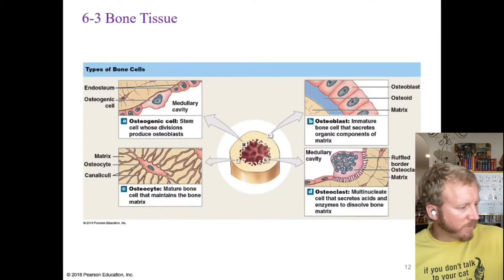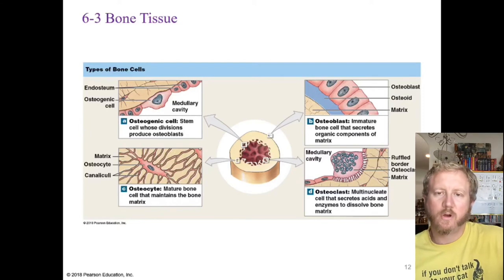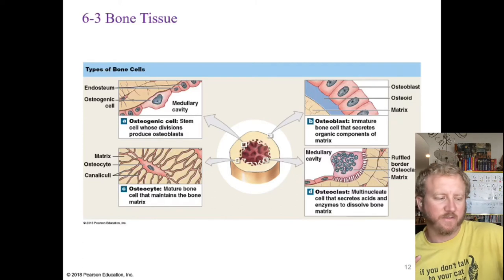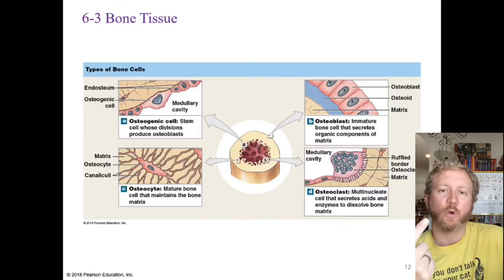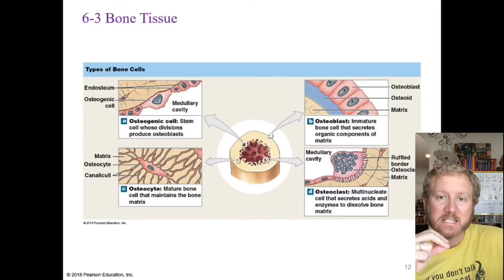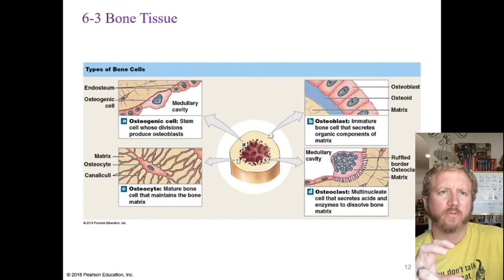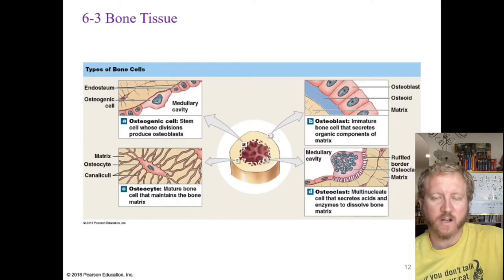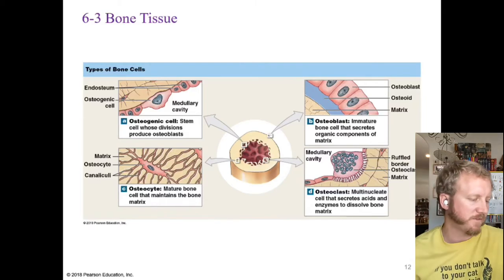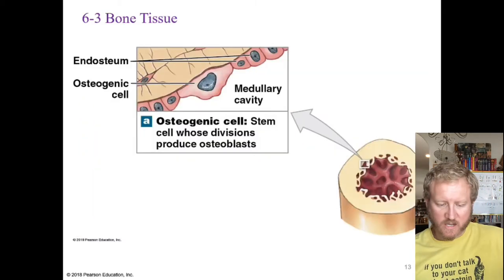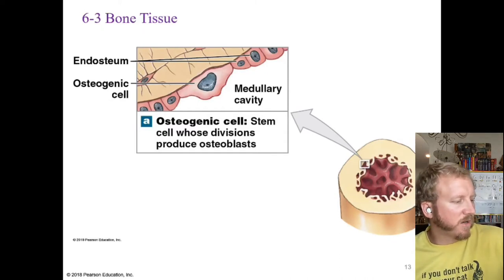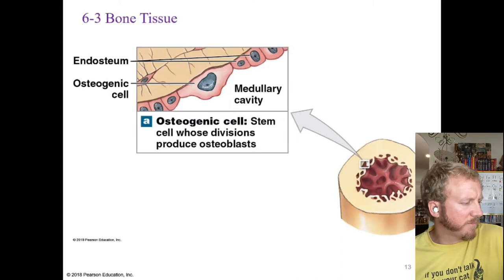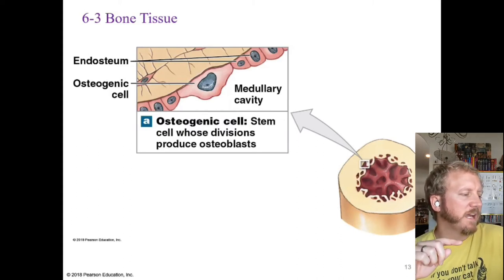Bone cells make up only about two percent of bone mass. There are four types: osteogenic cells, osteoblasts, osteocytes, and osteoclasts. Osteogenic cells are special stem-cell-like cells that divide to produce osteoblasts. They are located on the outside of bone in the periosteum and also in the endosteum, which lines the medullary cavity inside. They are primarily responsible for creating osteoblasts and helping in fracture repair.